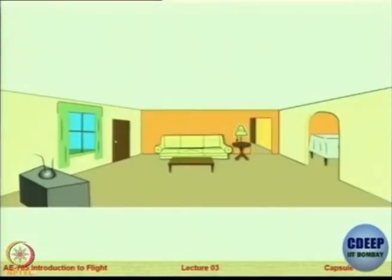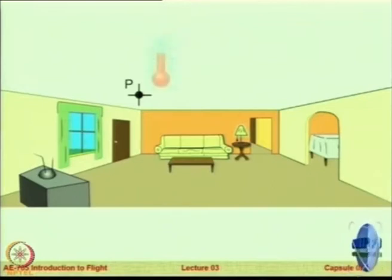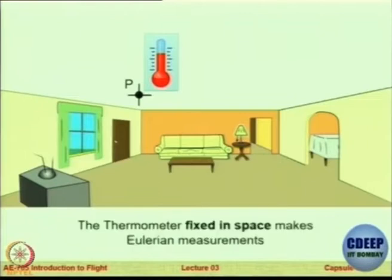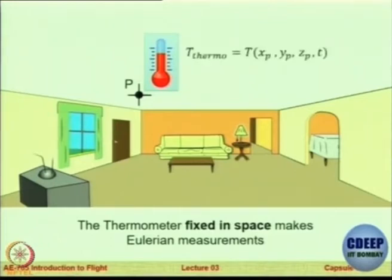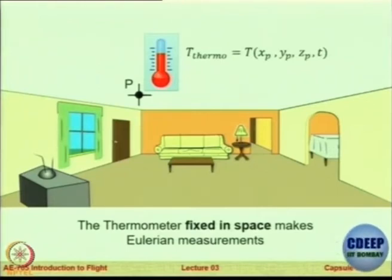As an example: in a typical room, you have a fixed point in space P, and at that point you install a thermometer. The thermometer that is fixed in space is going to make only Eulerian measurements. If you record the reading of this thermometer over a day, you get the value of temperature at that point x, y, z as a function of time — it will typically increase, then become less. So the temperature T, which is a field function defined everywhere along this field, is a function of the x, y, z coordinates of point P and time T.